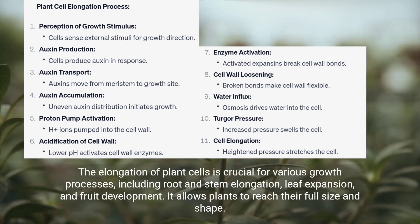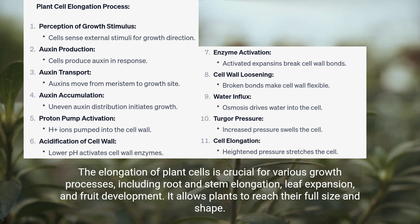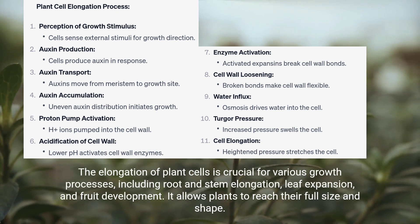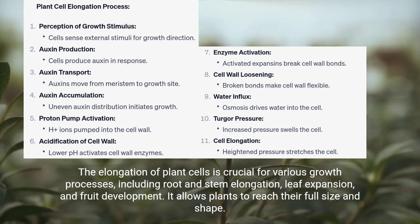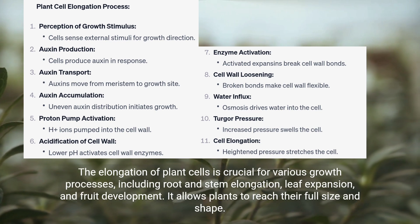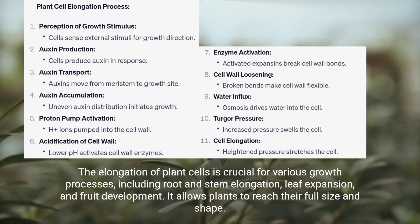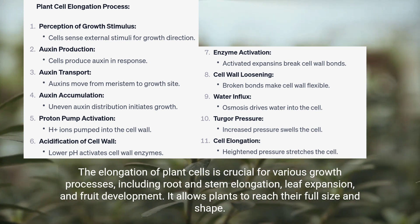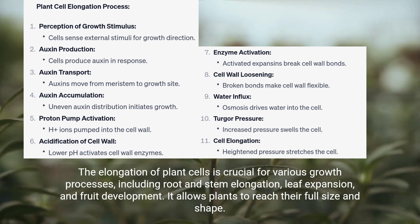The elongation of plant cells is crucial for various growth processes, including root and stem elongation, leaf expansion, and fruit development. It allows plants to reach their full size and shape.